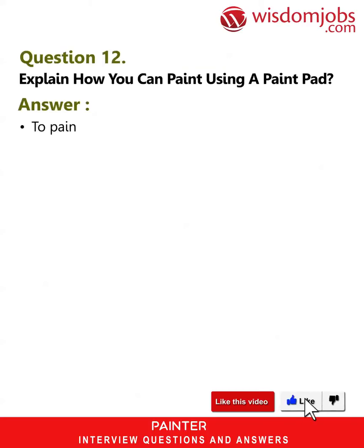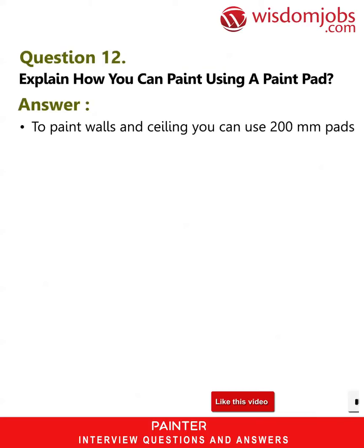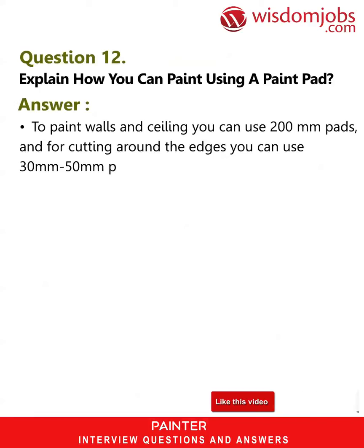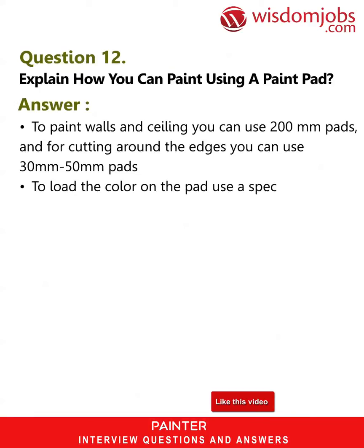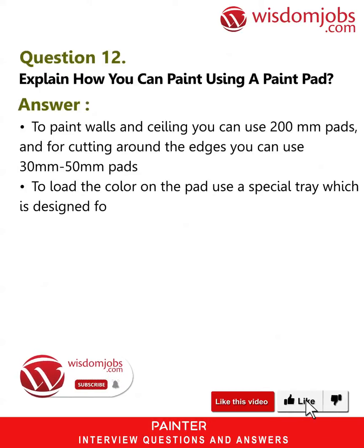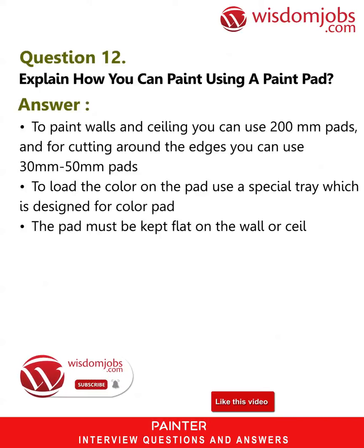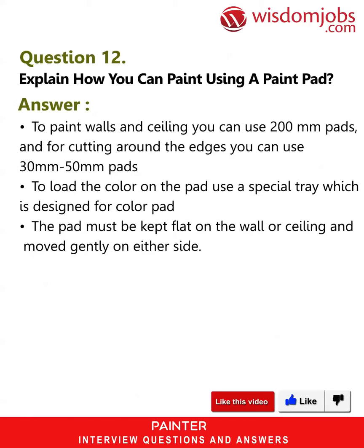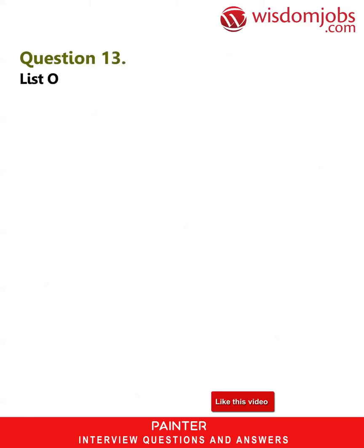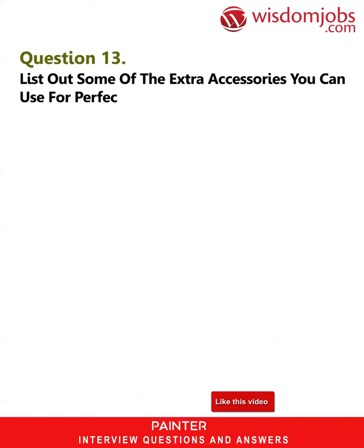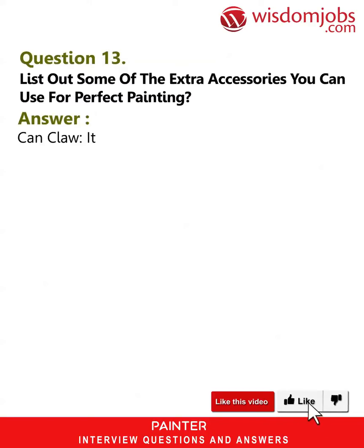Question 12: Explain how you can paint using a paint pad. Answer: To paint walls and ceilings, you can use 200mm pads, and for cutting around the edges you can use 30mm and 50mm pads. To load color onto the pad, use a special tray designed for paint pads. The pad must be kept flat on the wall or ceiling and moved gently from side to side.